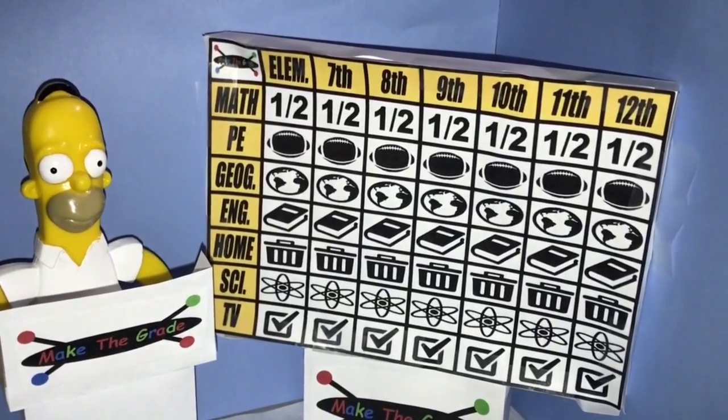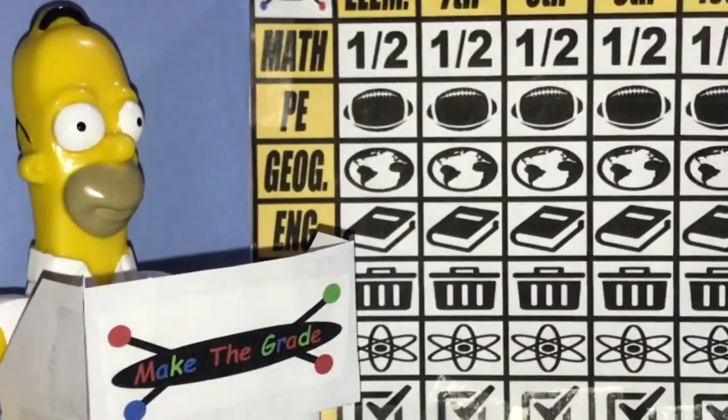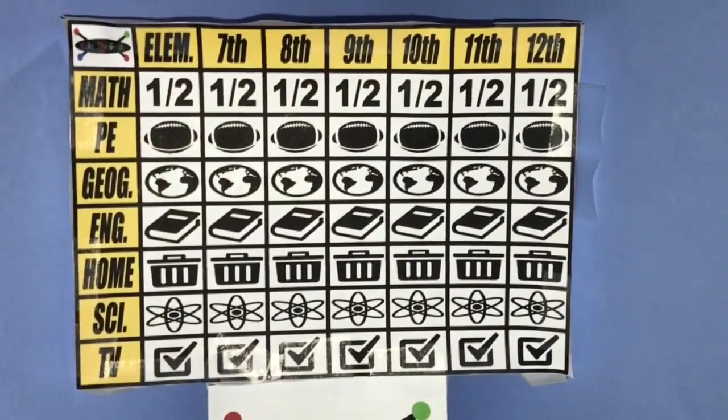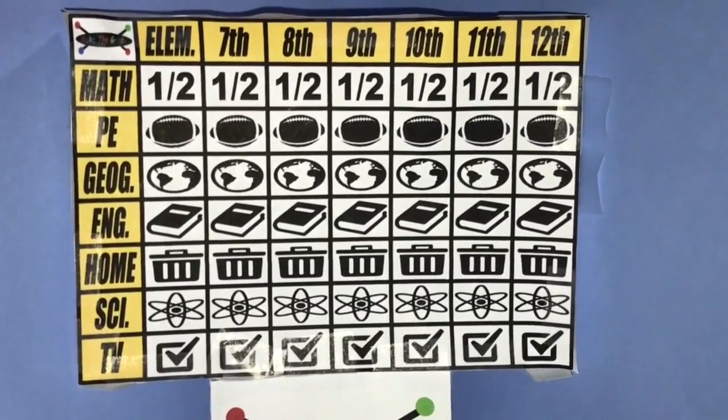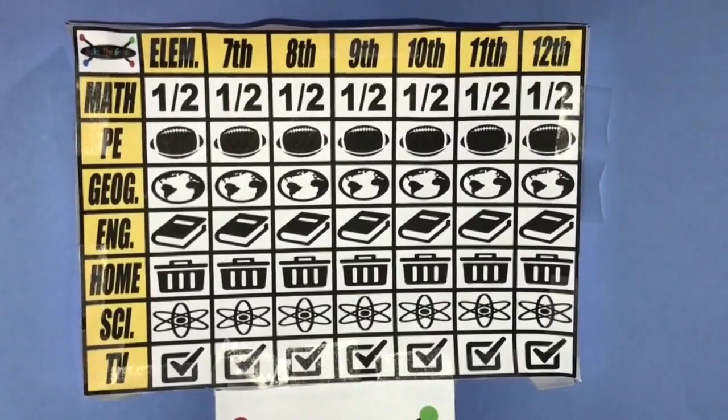From elementary school all the way up to 12th grade. The subjects for today are math, PE, geography, English, home economics, science, and elective category for today is TV game shows. Now, you can do it in any pattern you like. Diagonally, randomly, or across. Left to right, and up and down. Behind some of the question squares, we've hidden some free squares. But be careful. There's also some lose squares and some take squares. And fire drill squares.